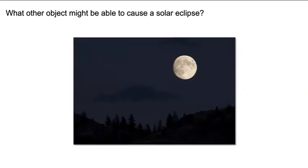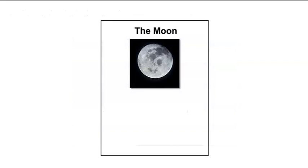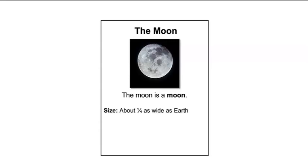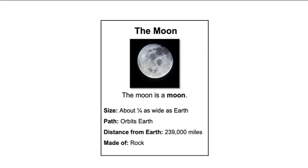In this lesson, we will gather more information to find out whether the moon can cause a solar eclipse. Let's read some information about the moon. The moon is a moon — a natural object that orbits a planet or asteroid. Earth has one moon. Other planets, such as Jupiter and Saturn, also have moons. The moon is about one-fourth as wide as Earth. The moon orbits Earth and is about 239,000 miles from Earth. The moon is made of rock.